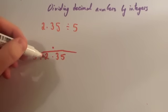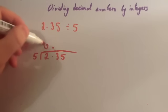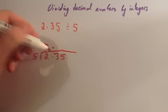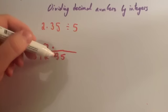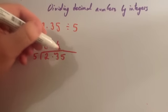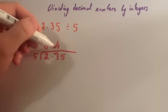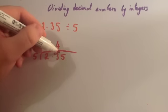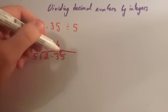How many 5s go into 2? No 5s go into 2, and the 2 is the remainder. How many 5s go into 23? There's 4 5s in 23. 4 5s is 20, so the remainder is 3.